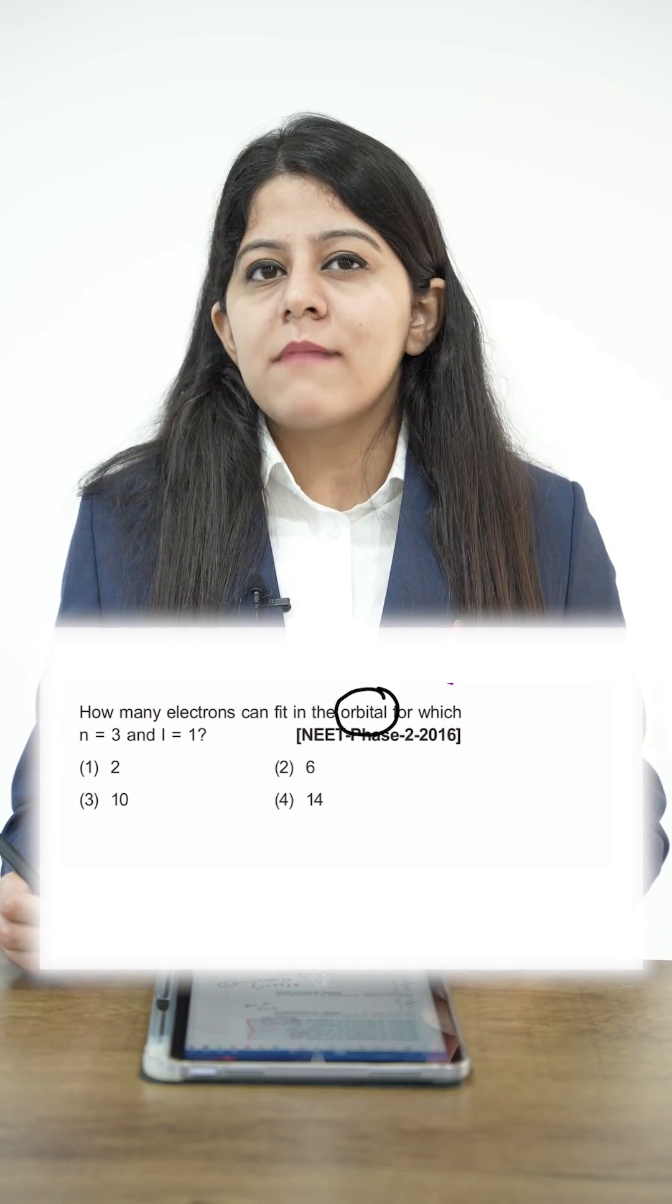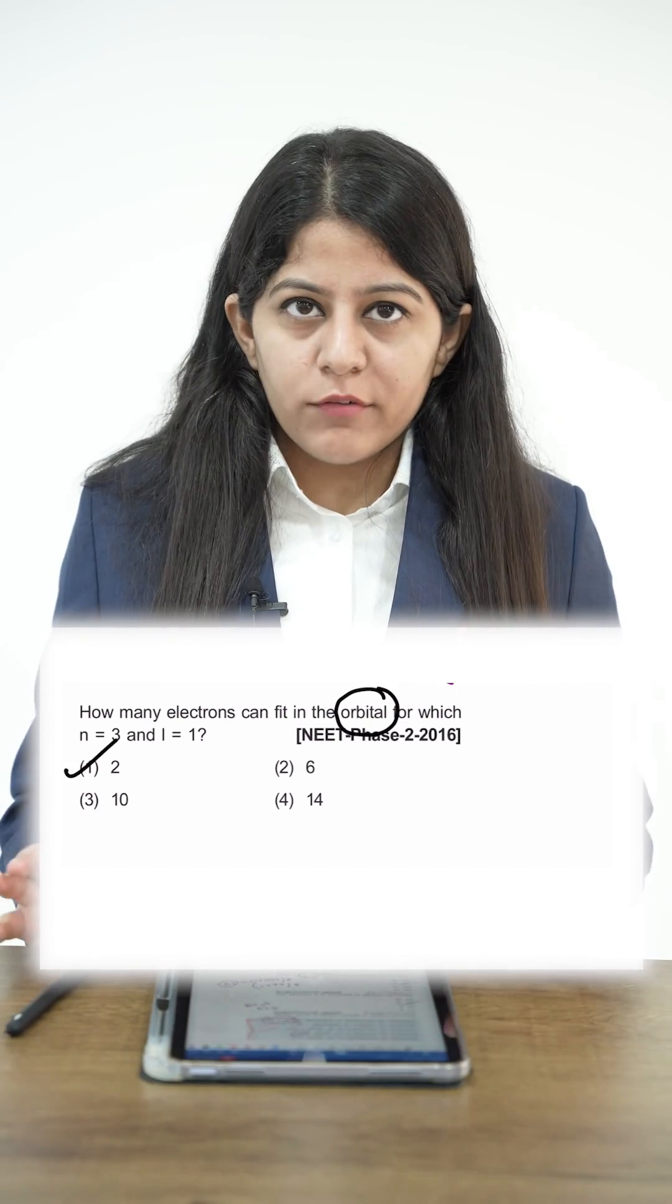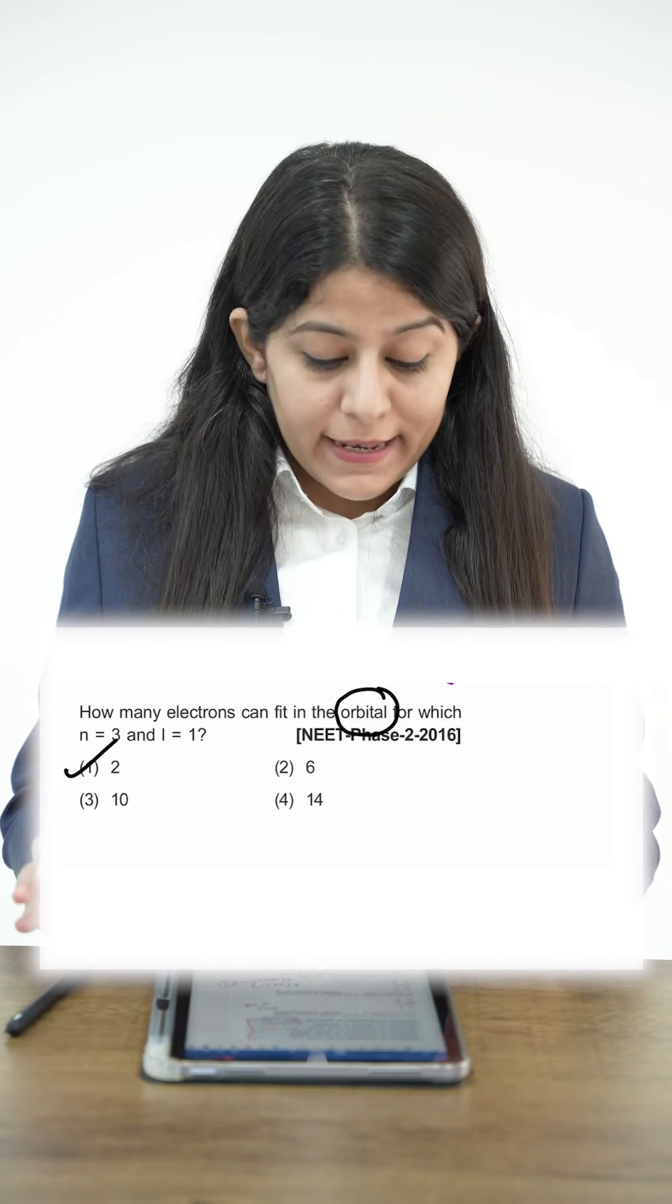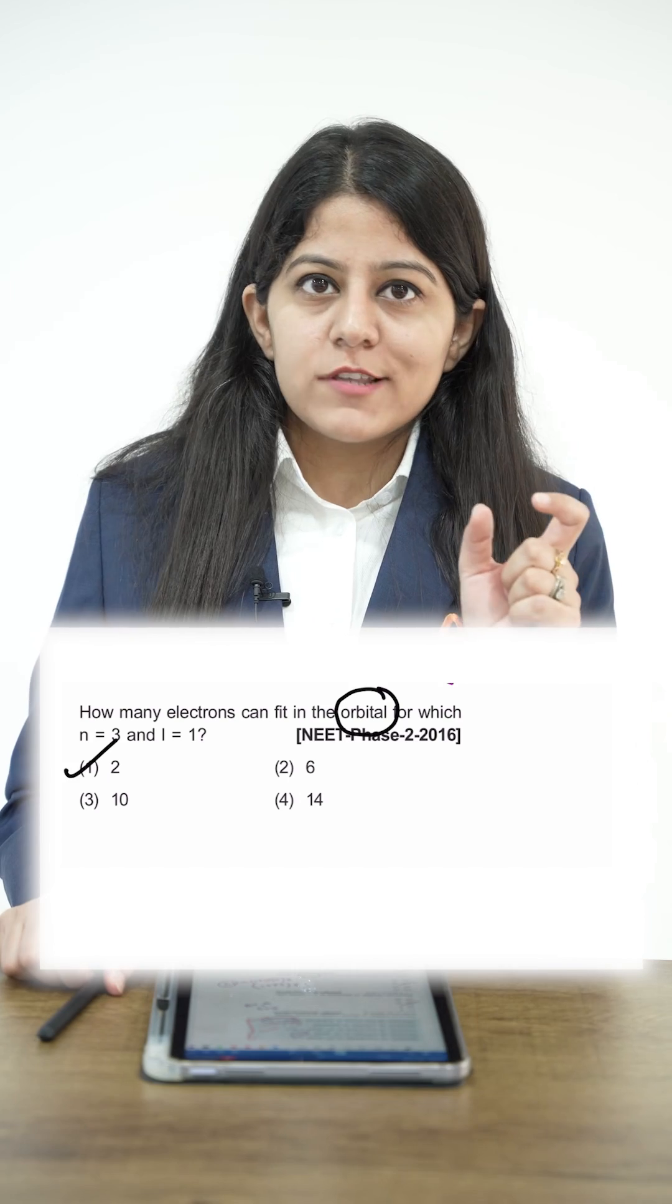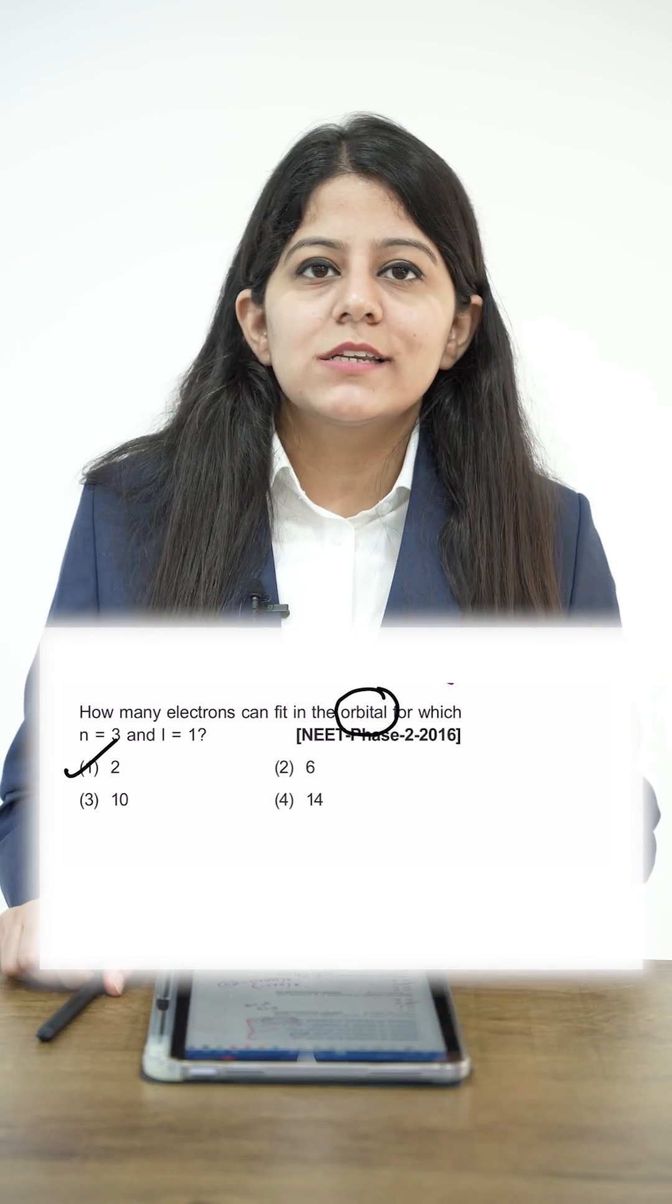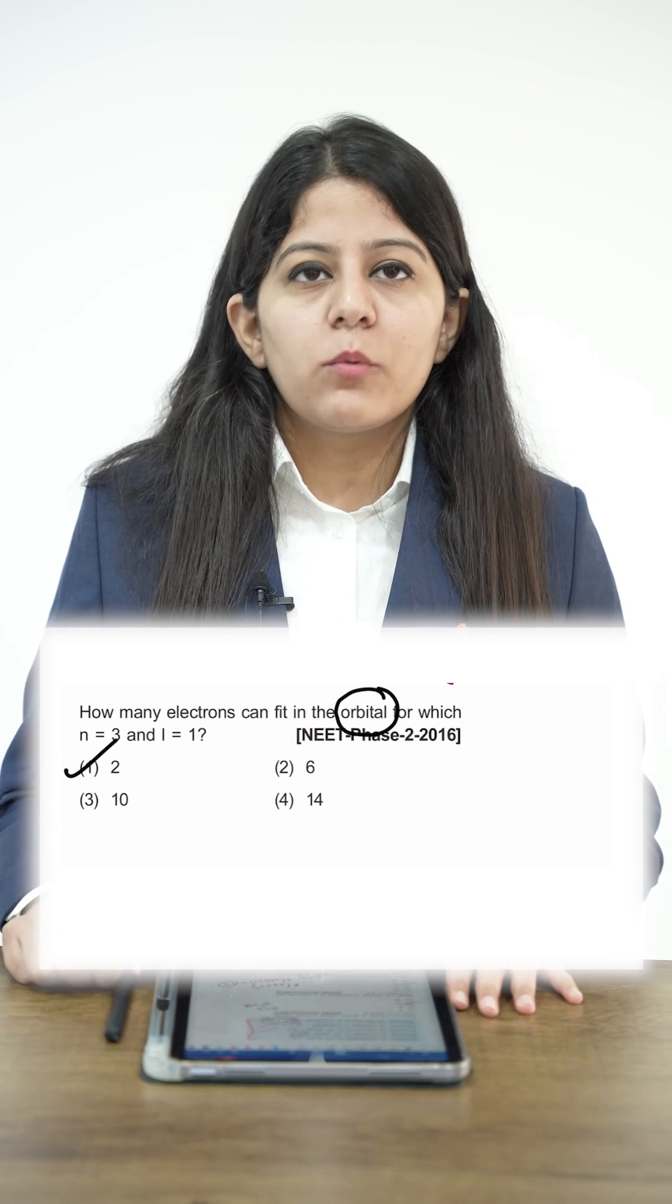So our answer is always 2, whatever the value of n or l. What you have to see is the word 'orbital'. If the number of electrons are asked in an orbital, our answer is always 2. The correct answer is 2, option 1.